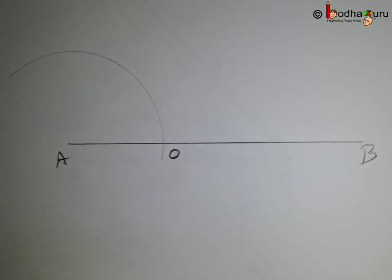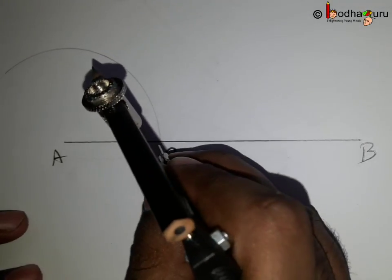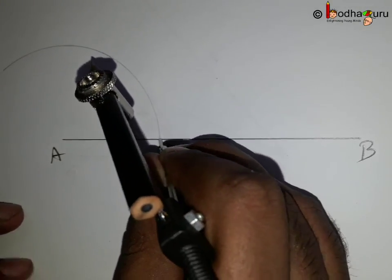Now, without disturbing the compass, i.e. the same radius is maintained, we put the needle of the compass on point O and draw an arc again.